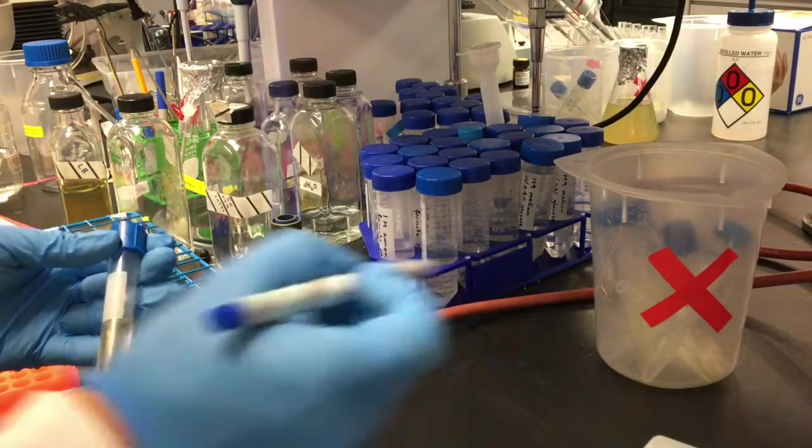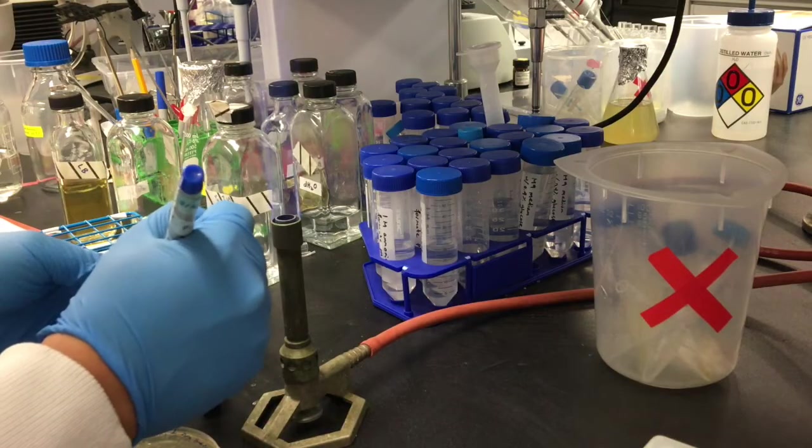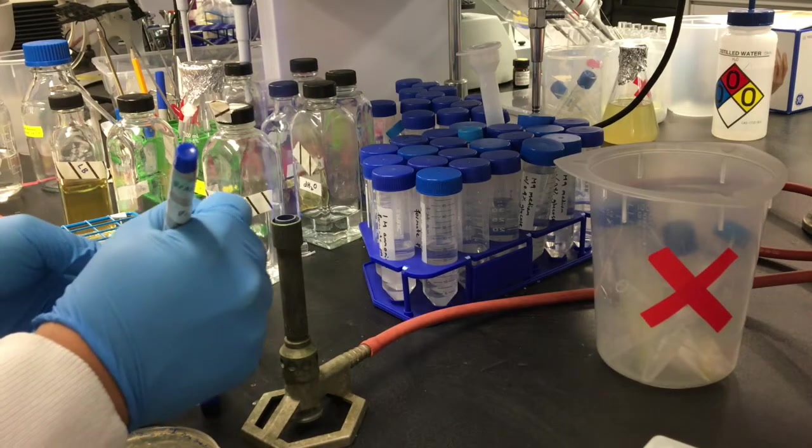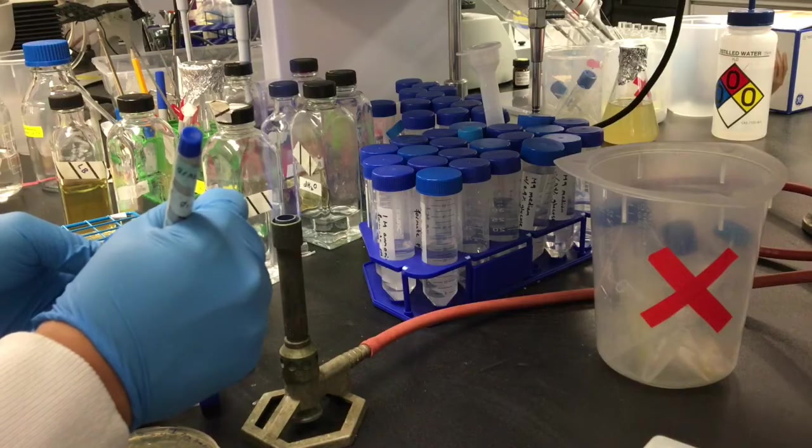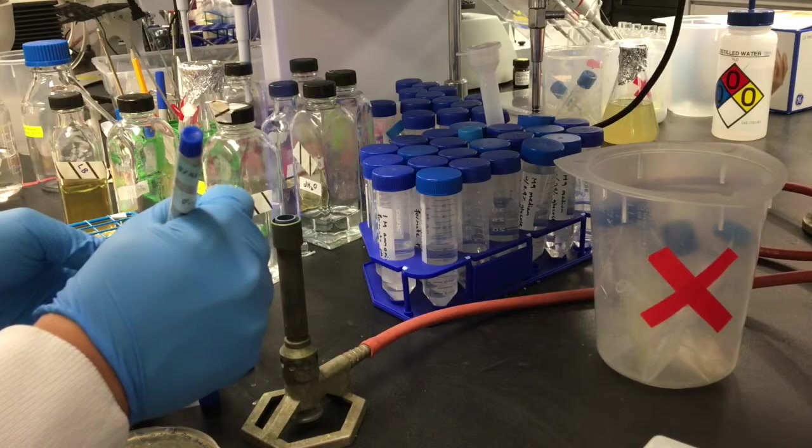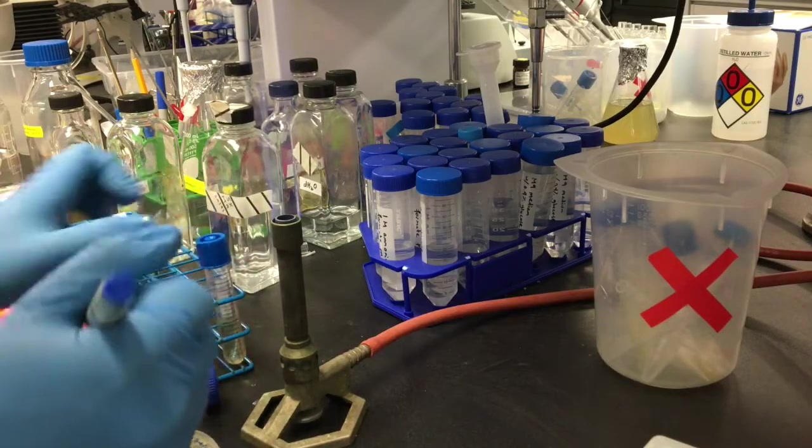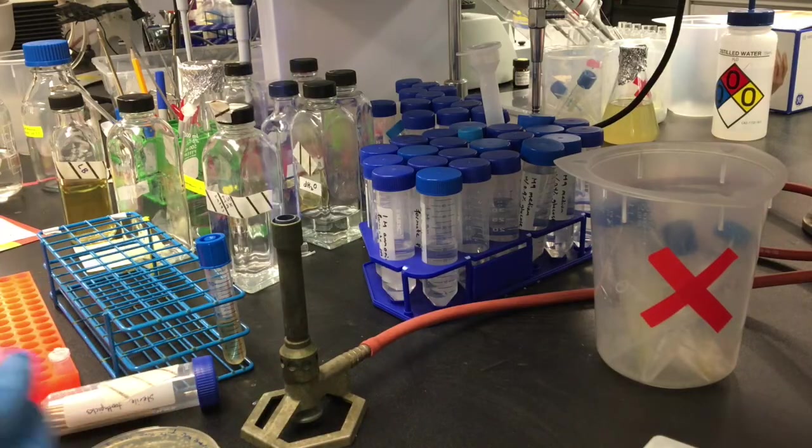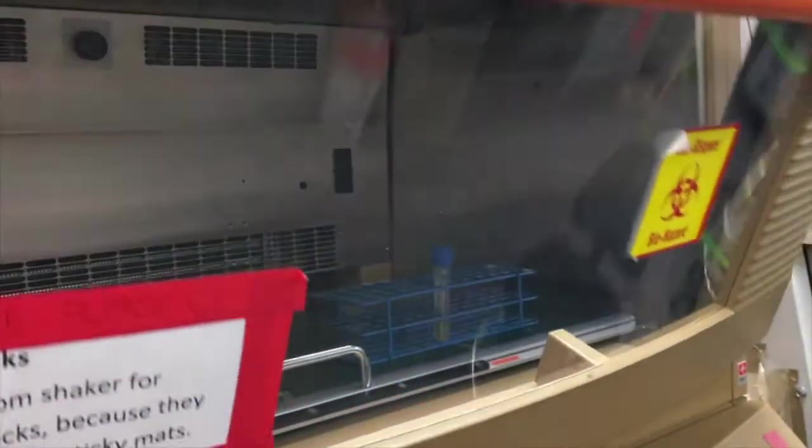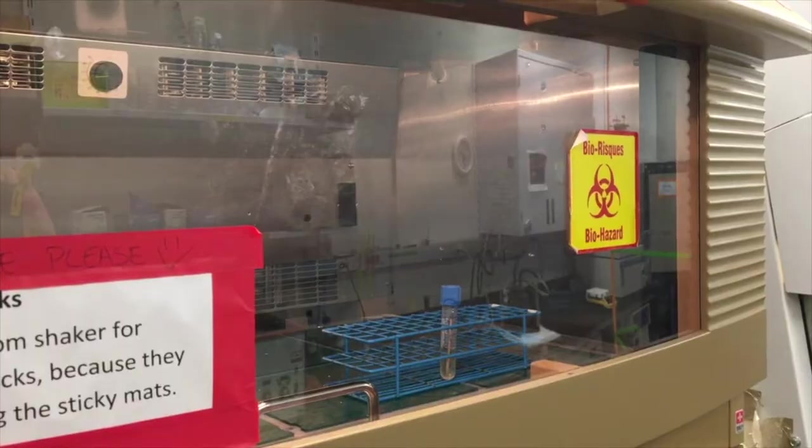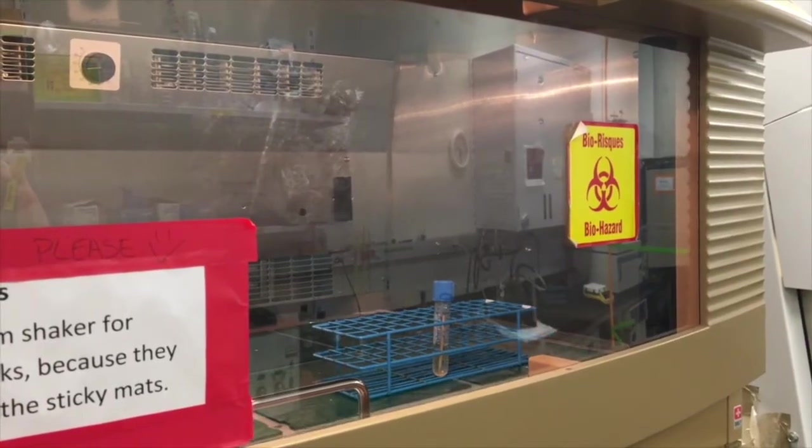Always label your tubes. Turn off the flame when you're done, and never leave a Bunsen burner unattended. We will incubate the starter culture overnight at 37 degrees Celsius with shaking.